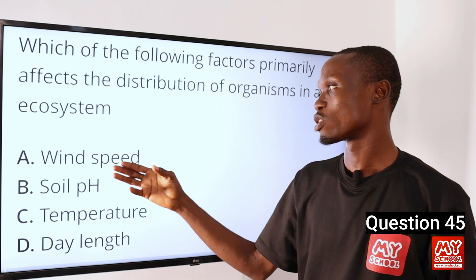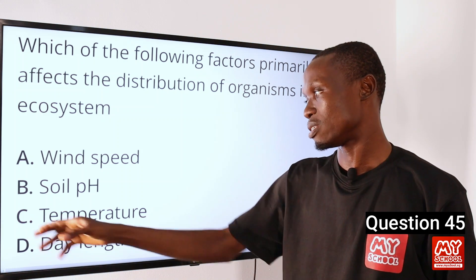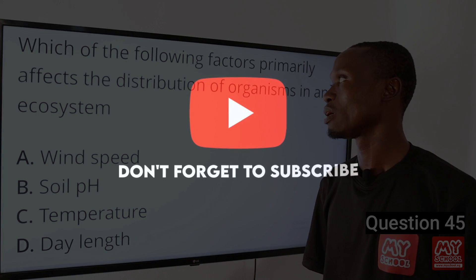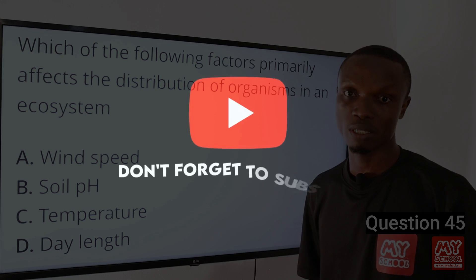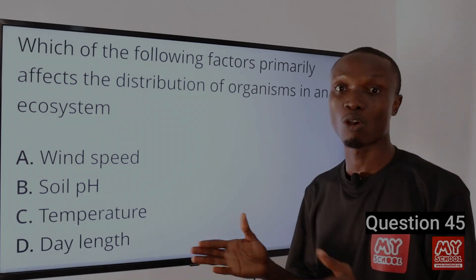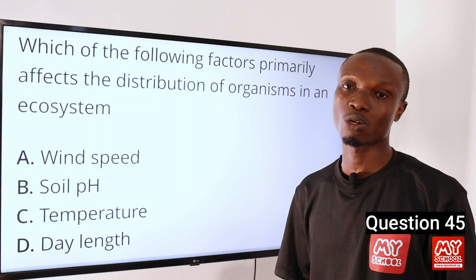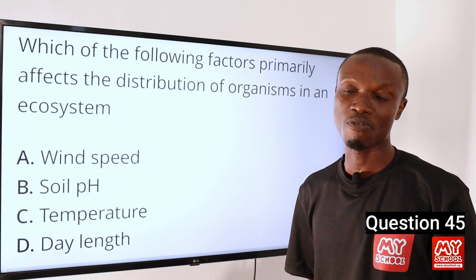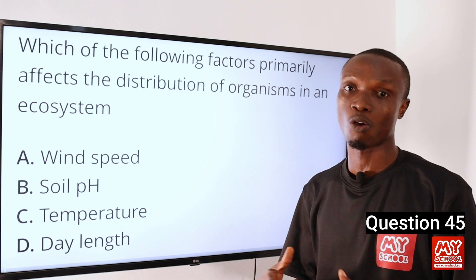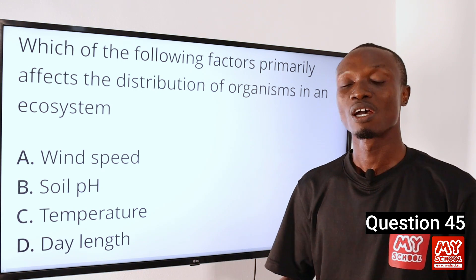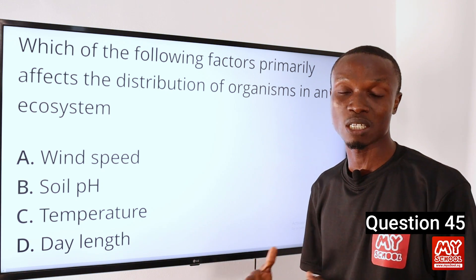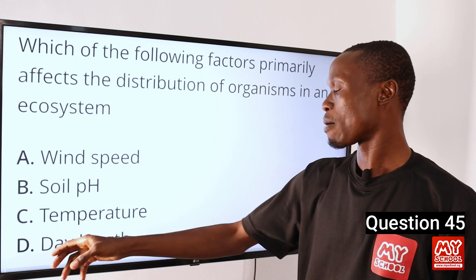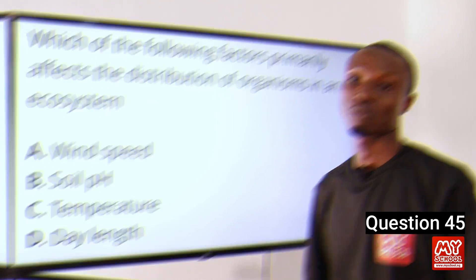The answer to this question is option C — temperature. Temperature primarily affects the distribution of organisms in an ecosystem. It is a crucial factor that influences the growth, survival, and reproductive capacity of organisms. Different organisms have specific temperature requirements and tolerance ranges. So that makes option C the correct option.